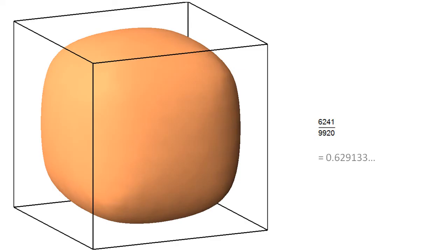First, some examples. This is the subdivision surface defined by the unit cube and the Doo-Sabin scheme. The enclosed volume is the fraction indicated.